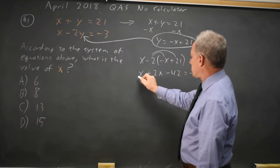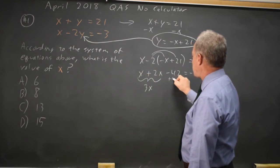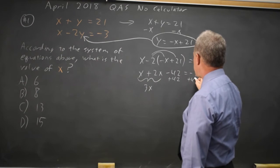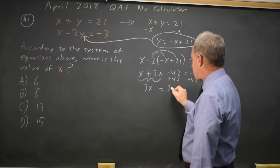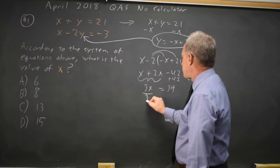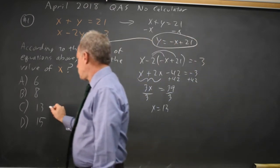I'm going to combine x plus 2x to get 3x, and then I add 42 to both sides. So 3x equals 42 minus 3 is 39. Divide both sides by 3, and I get x equals 13. Choice C.